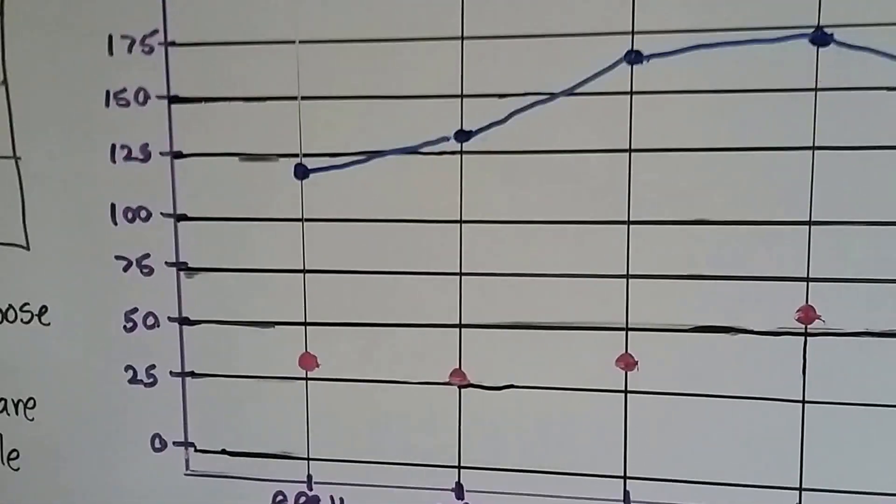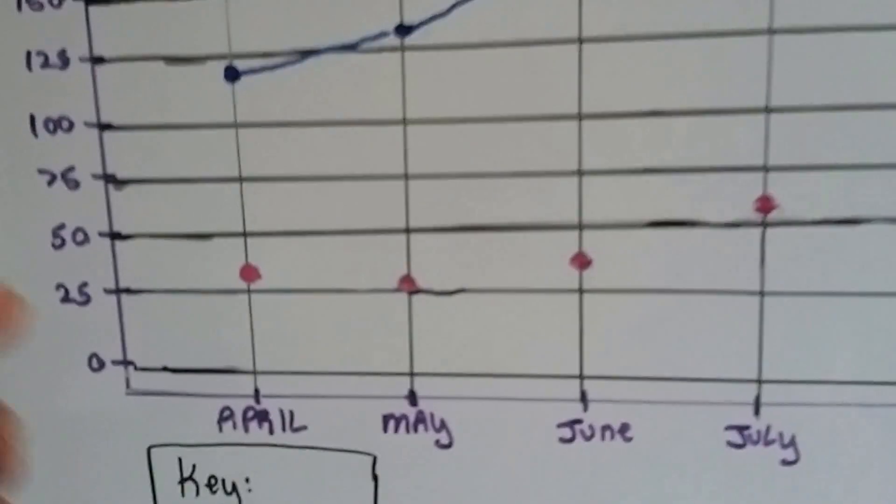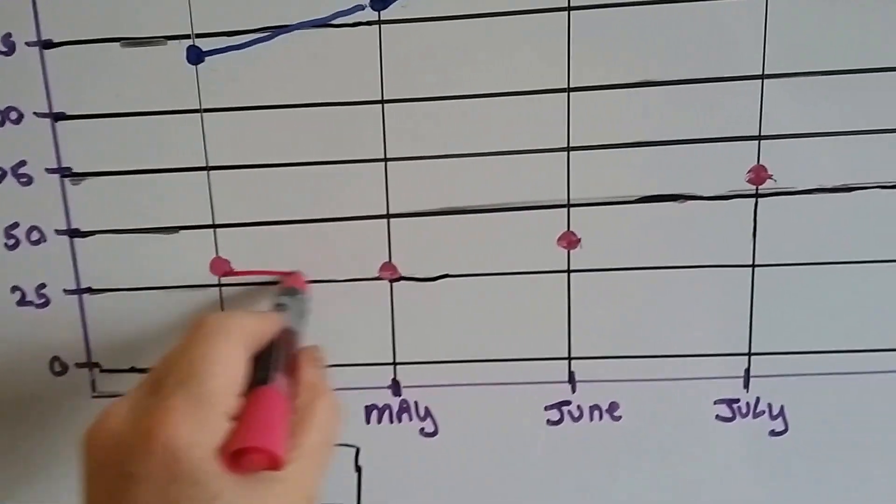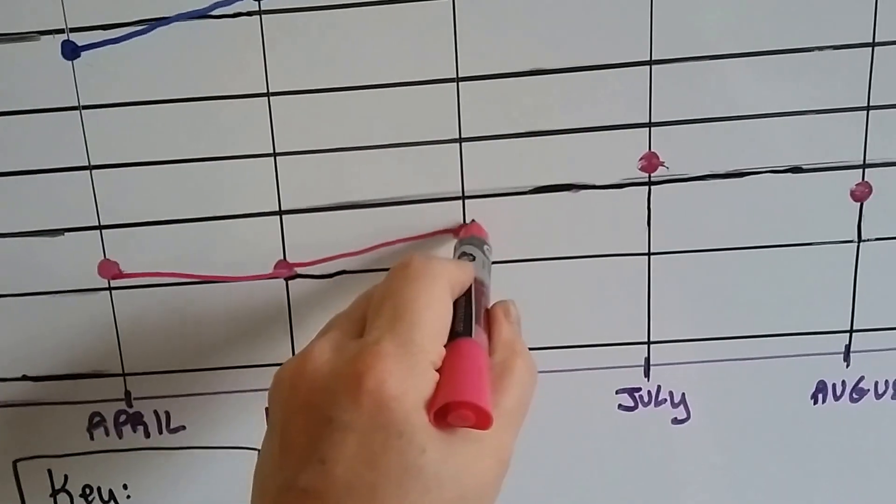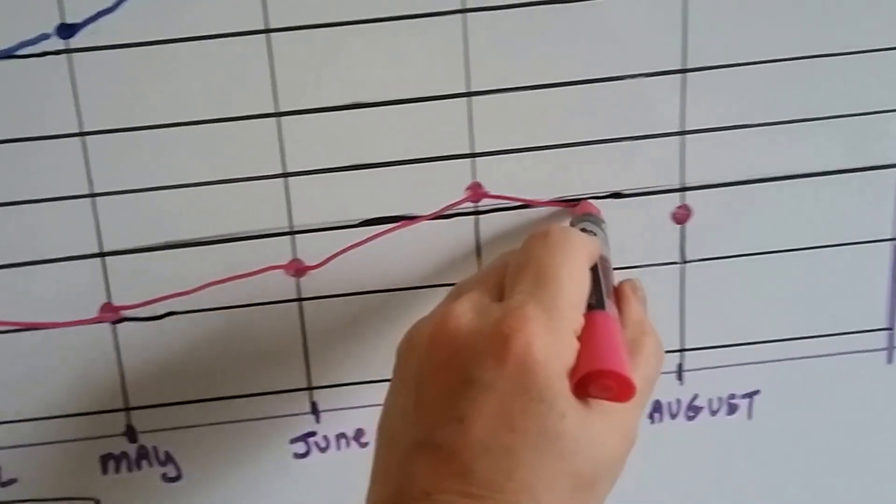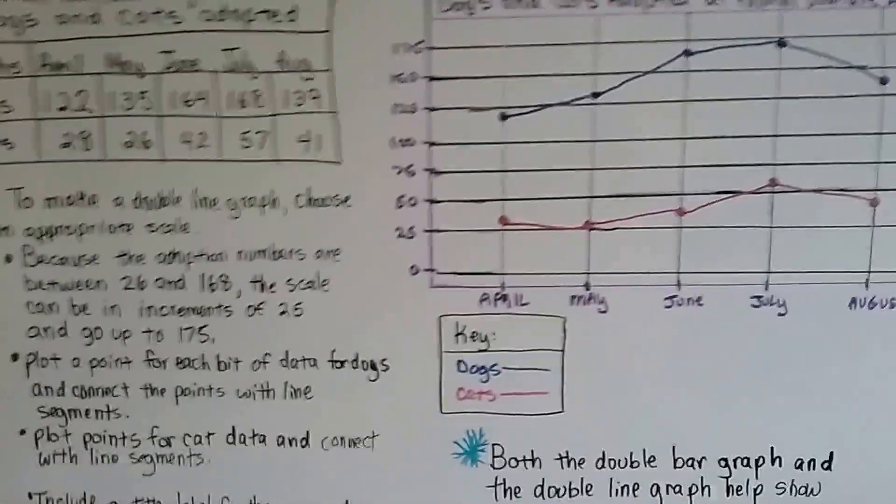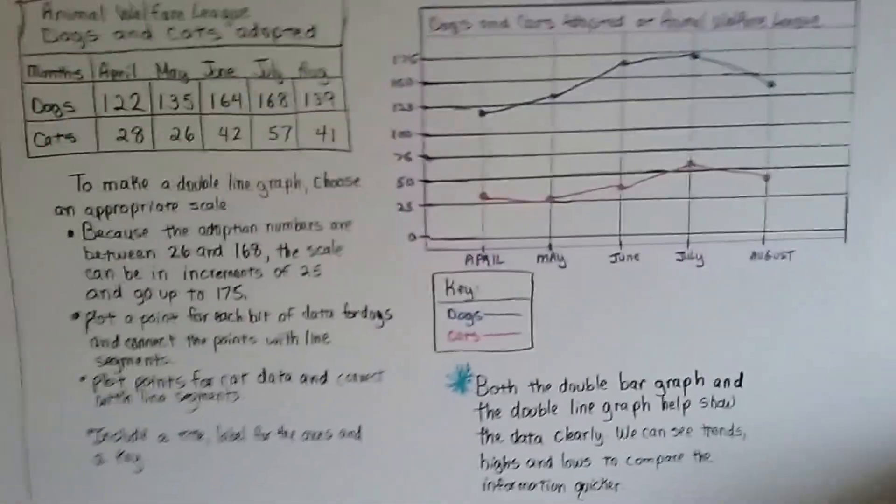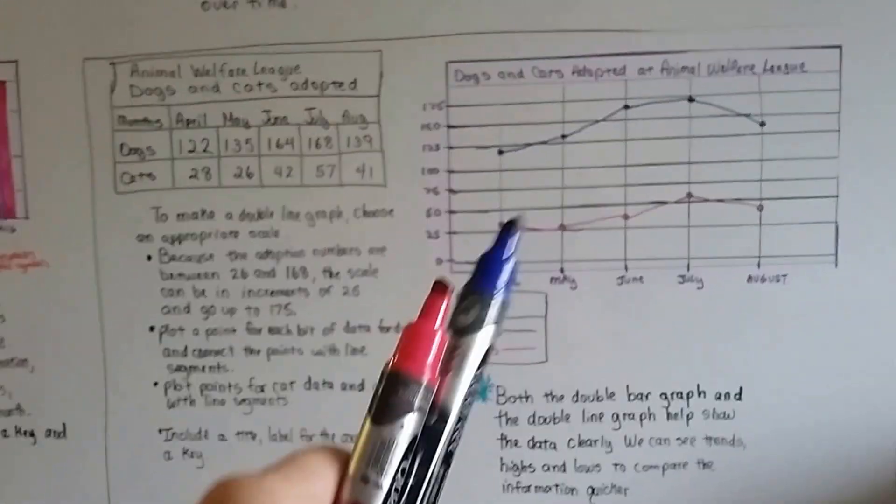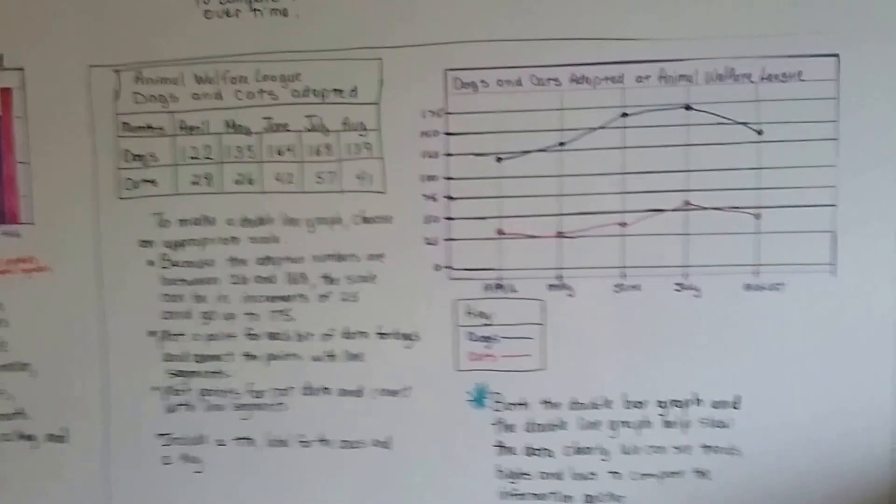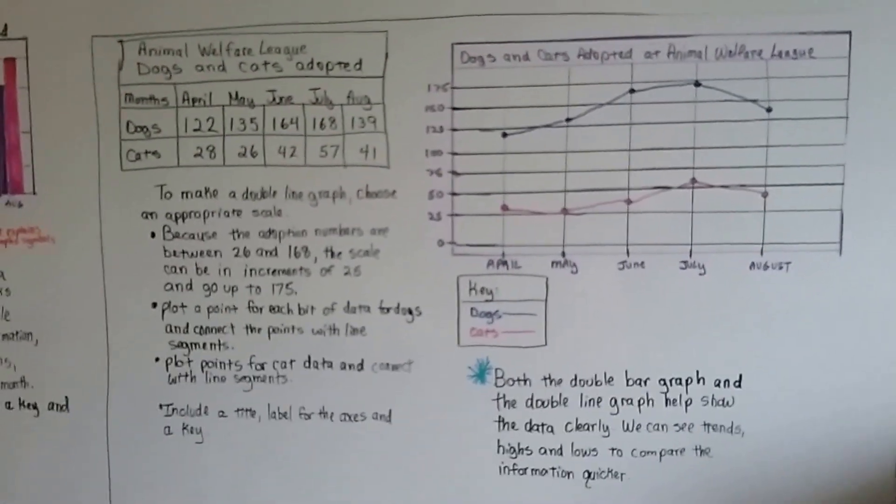So the blue is dogs and the pink is cats, and we connect them with line segments. If I didn't have to hold the camera, I would have used a ruler to make it neater. But you can see the information more clearly and the highs and lows of the adoptions. You can see that in June and July they did more.